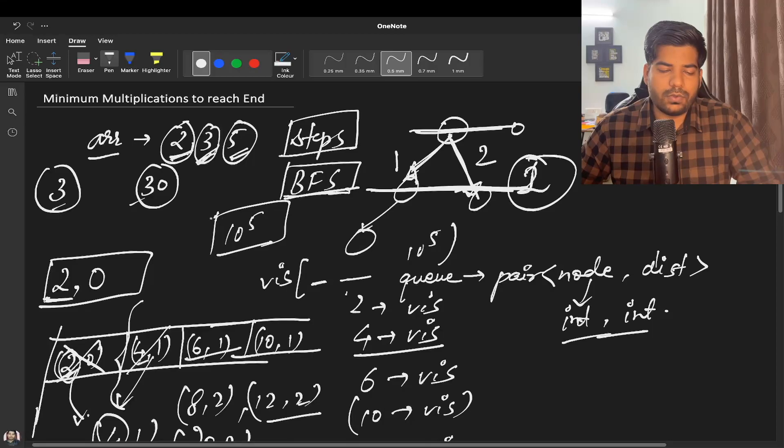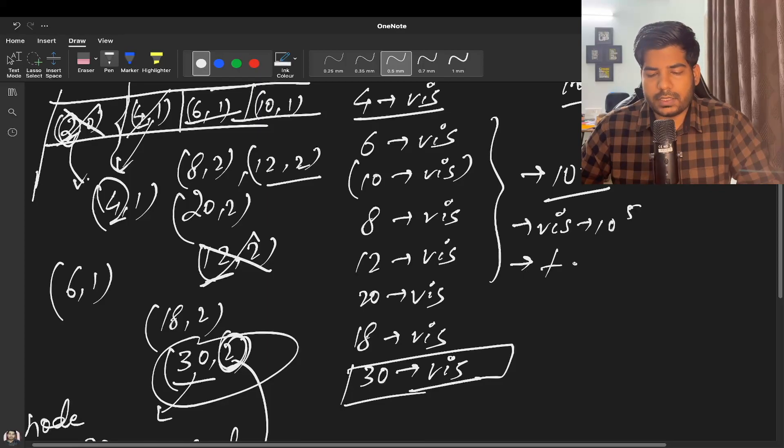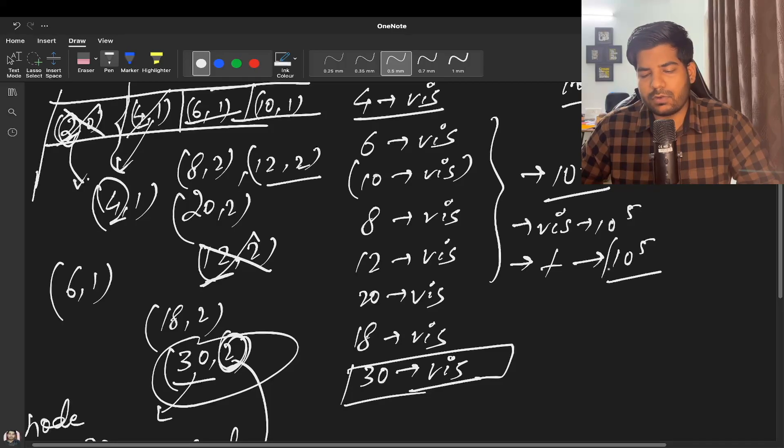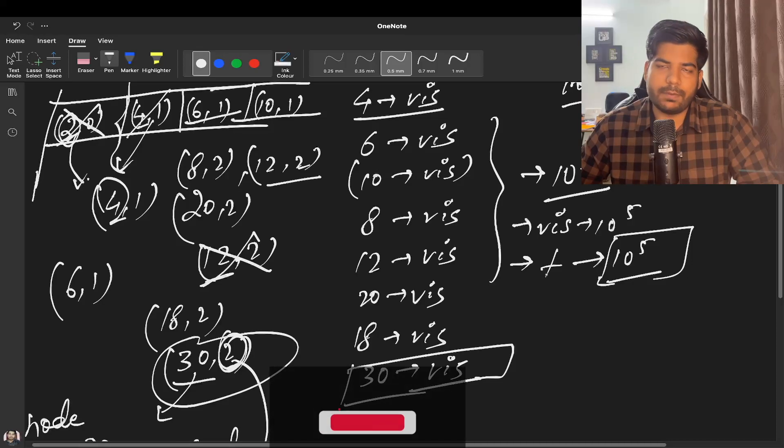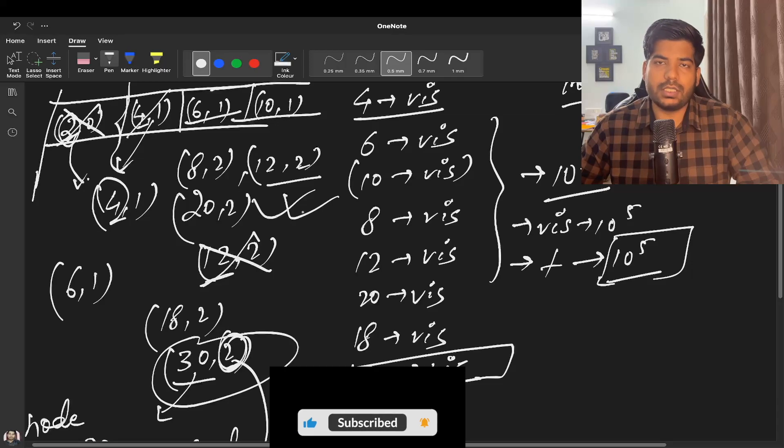I hope the problem is clear. What we are going to do is we will be having a queue. Maximum queue size can be 10 to the power 5. Visited array size is also 10 to the power 5. And my time complexity is going to be 10 to the power 5 maximum, because that number of nodes can get visited during the course of time. So this is the most optimal approach for this question.